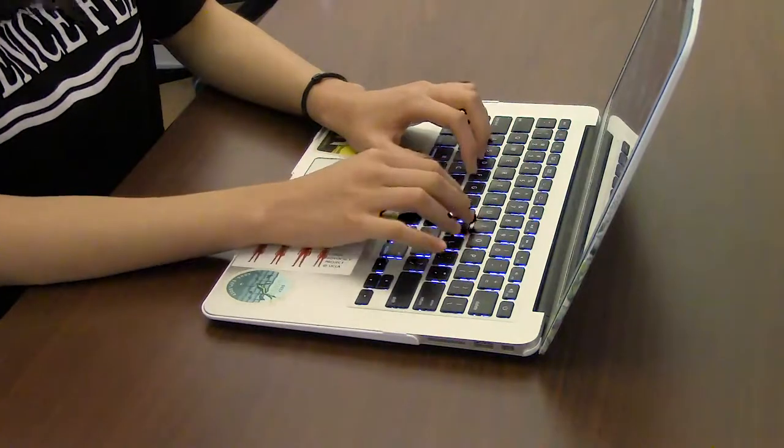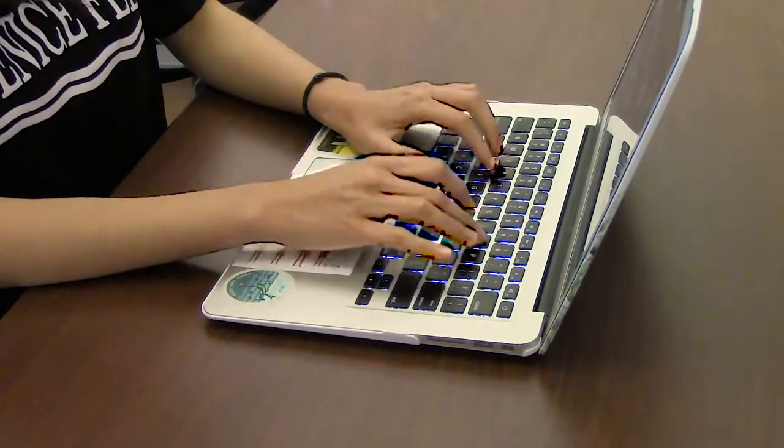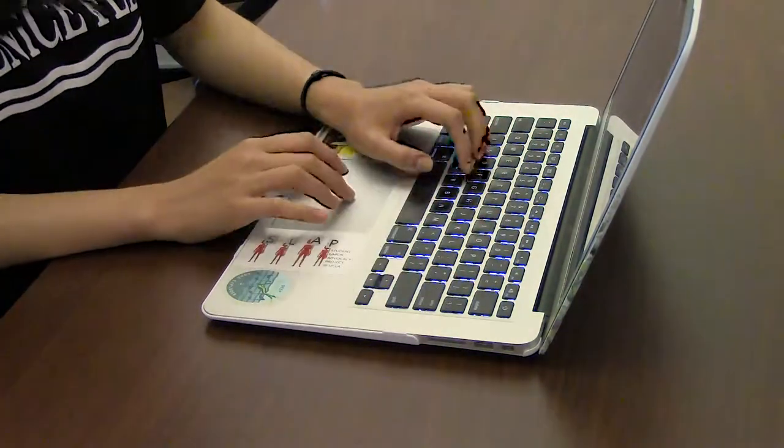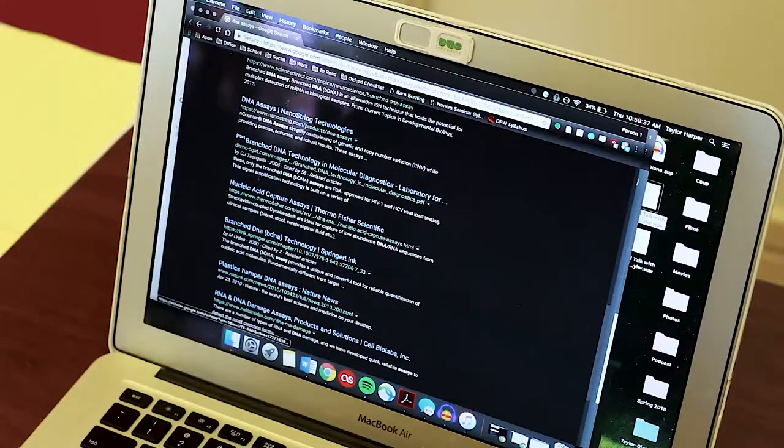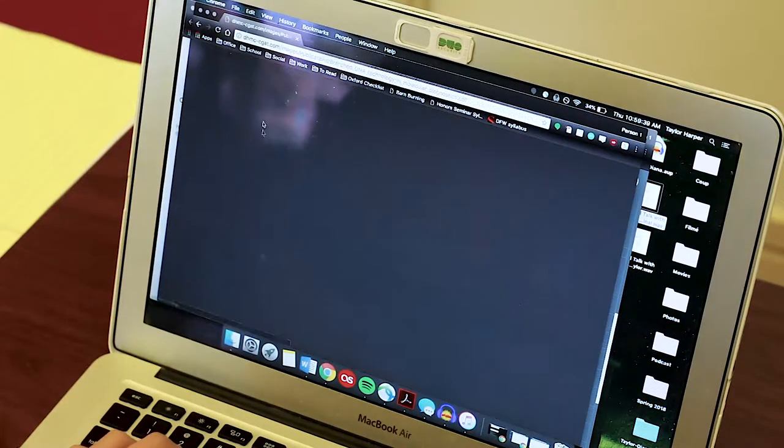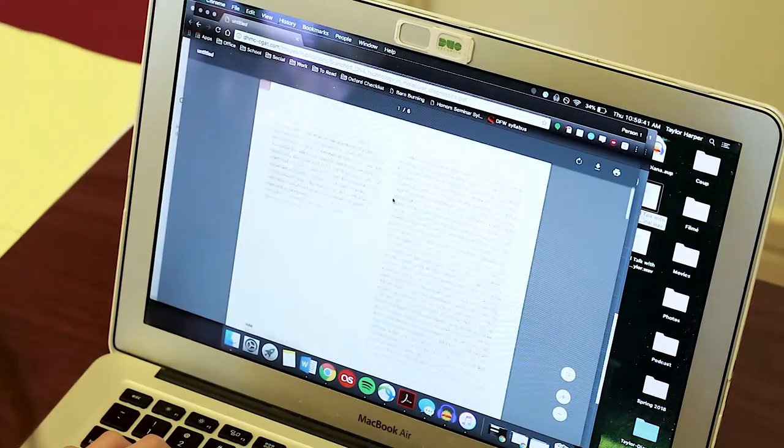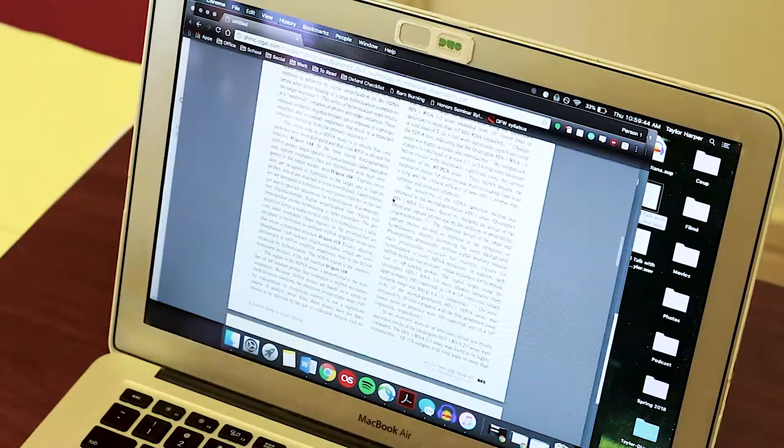Once I find the terms I want to define, where I look will depend on the nature of the reading material. For example, if I'm reading a scientific article, I use Google Scholar to find other articles that address the same concept in another way.